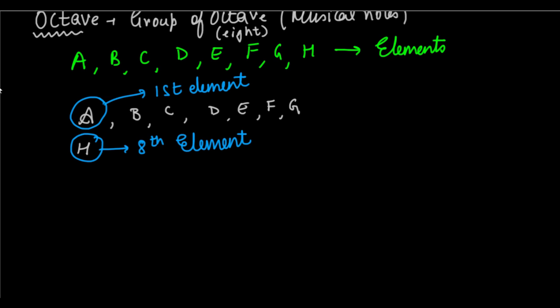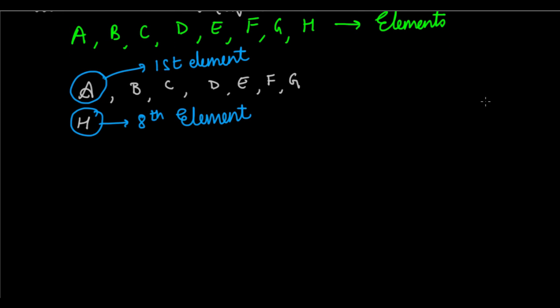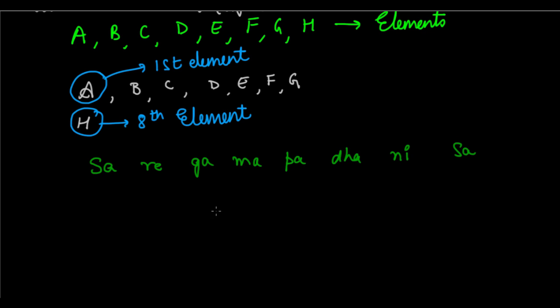The English form of musical notes is Do Re Mi Fa Sol La Ti, something like that. But since we are Indian students, we are better off with Sa Re Ga Ma Pa. The Hindi notes are Sa, Re, Ga, Ma, Pa, Dha, Ni — and then again Sa. You can see that the eighth note is the same as the first note.